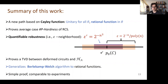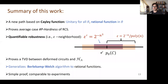Berlekamp-Welch is amazing: suppose you have a degree-d polynomial, and you give it n points (θᵢ, P(θᵢ)), but t of those points are completely wrong—not even close to the correct value. You don't know which ones are wrong. Yet Berlekamp-Welch can still recover the polynomial exactly. This is essentially an error-correction property: you encode messages in the coefficients of a polynomial, and even if some evaluations are corrupted, you can still recover the polynomial. I had to generalize this to rational functions because that's what I work with.